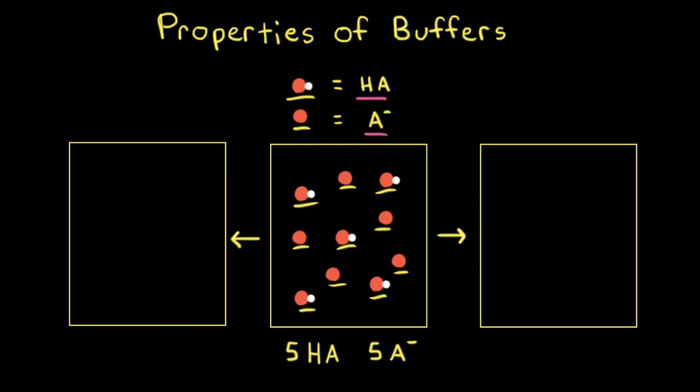Also notice that like water molecules, cations are also left out of the particulate diagram. So we have 5 HA particles and 5 A- particles in our aqueous solution. Having equal amounts of a weak acid and its conjugate base is a good buffer solution.